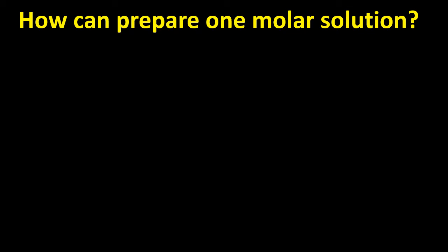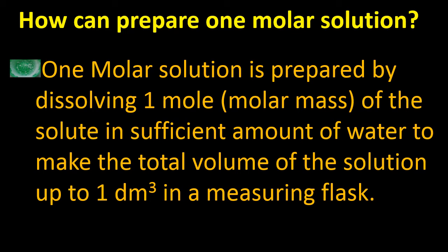How can we prepare a one molar solution in labs? A one molar solution is prepared by dissolving one mole of the solute in sufficient water to make the total volume one decimeter cube. We take a measuring flask labeled as one decimeter cube, add the solute into it, and then add water until it reaches the calibration mark of one decimeter cube.